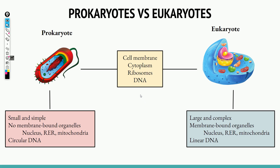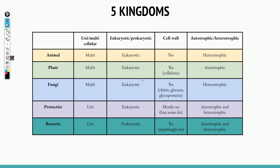Let's go through each of the five kingdoms. Starting with the animal kingdom: animals are multicellular, eukaryotic, they don't have cell walls, and they're heterotrophic. That describes us — we can't make our own food, and our cells are complex with a nucleus, rough endoplasmic reticulum, and all that sort of structure.